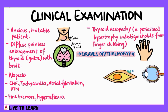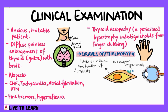Since TSH receptor autoantibodies are not very specific, they can cross-react with TSH-like receptors in the eye, causing Graves' ophthalmopathy. This involves cytokine-mediated proliferation of fibroblasts that secrete hydrophilic glycosaminoglycans and increase the interstitial fluid content. This leads to proptosis and, in severe cases, optic nerve compression.